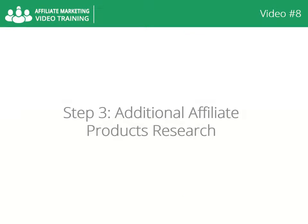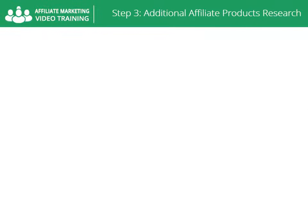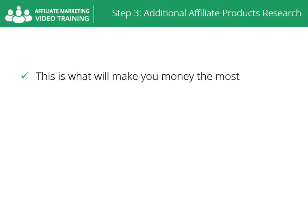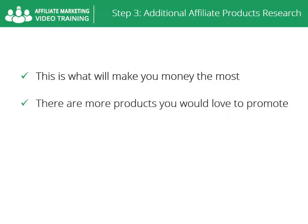Video number eight. Step three: Additional affiliate products research. You might be asking yourself why there are two steps almost identical to each other. Well, the answer is because this is what will make you money the most. You already have found out what the main product is you'd like to promote, but there are so many great products you would love to promote — and you can promote all of them. That's what this step is all about.